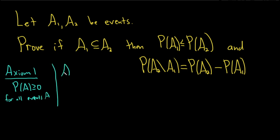The second axiom is quite nice. It's that P of the sample space is equal to 1. So that's super useful. This is axiom 2.